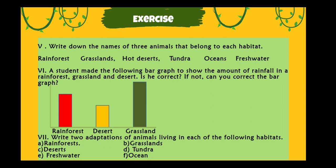Number six: a student made a bar graph to show the amount of rainfall in a rainforest, grasslands, and desert. Is the student correct? If not, can you correct the bar graph? This bar represents rainforest, this one is for rainforest, and this one is for grassland.